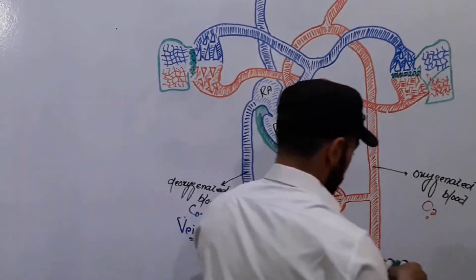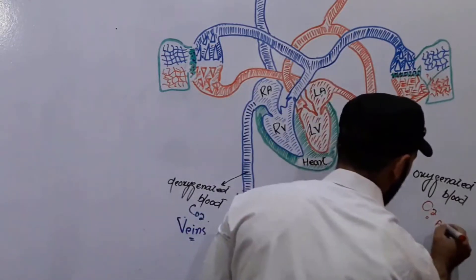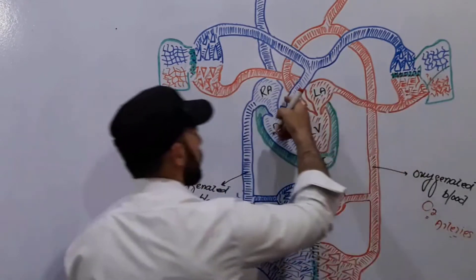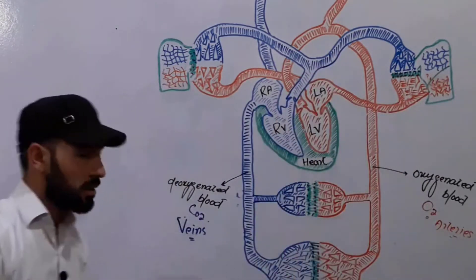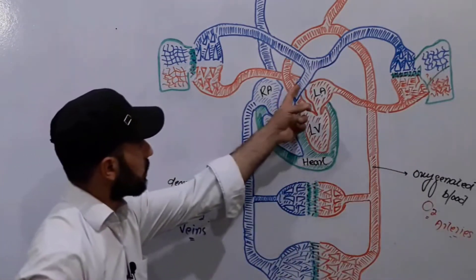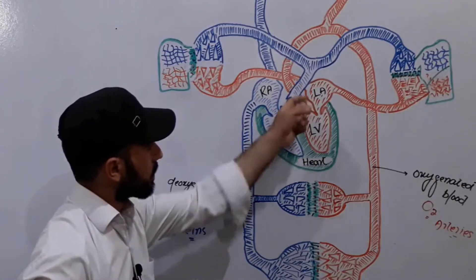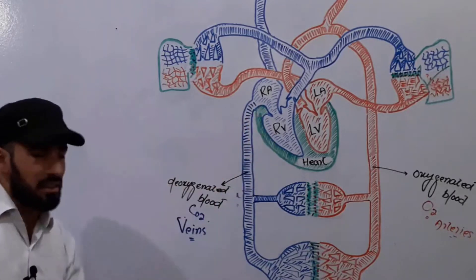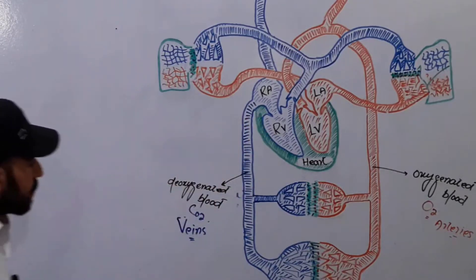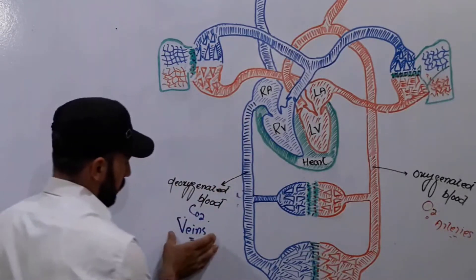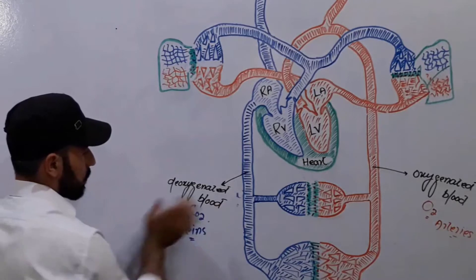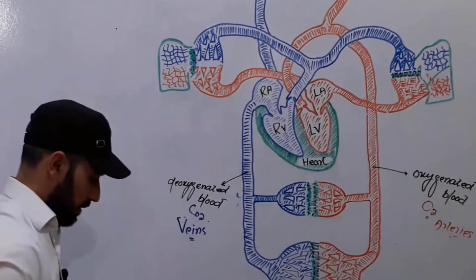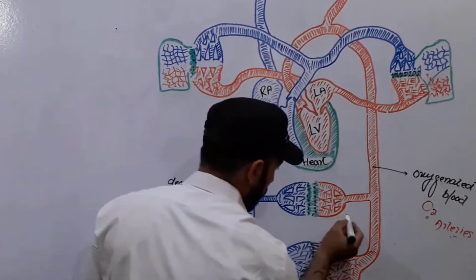Oxygenated blood is present in the arteries — except there is an exception where an artery still contains deoxygenated blood; we will discuss that later. So generally, our veins contain deoxygenated blood and generally our arteries contain oxygenated blood.